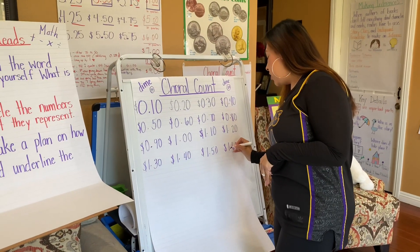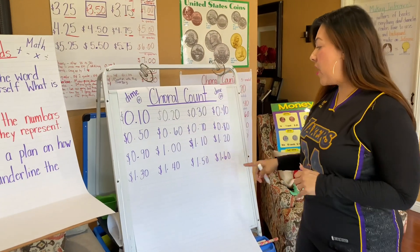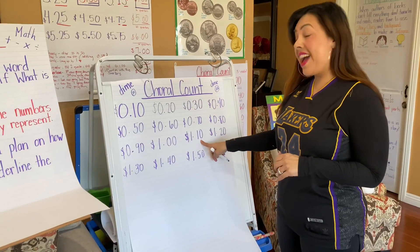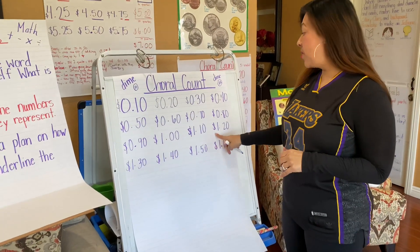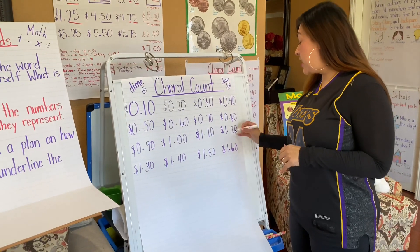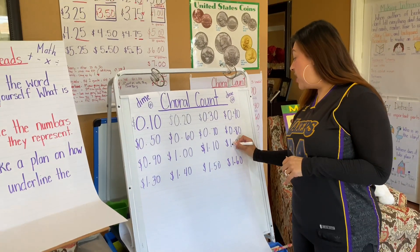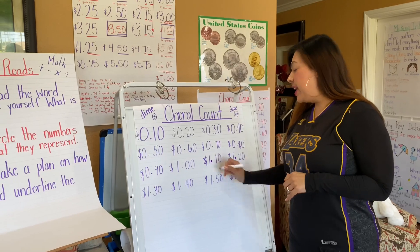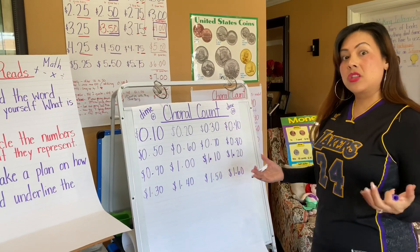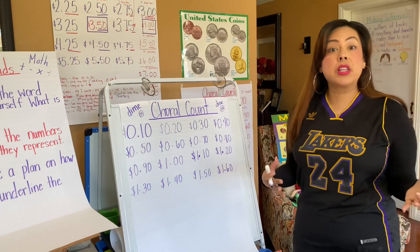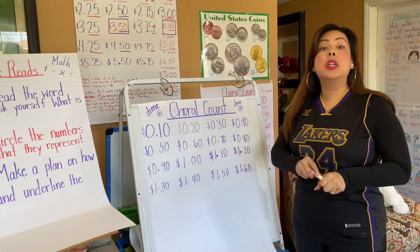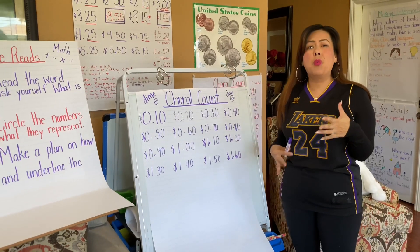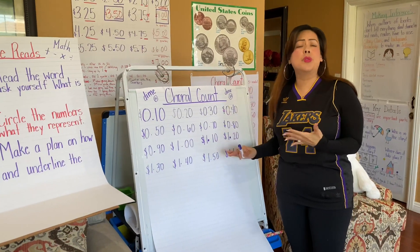I don't know if you've noticed that when I'm doing the choral counts, after I hit a dollar, I say $1.10, $1.20 — because this decimal point in money, we say 'and.' So that's one thing that I wanted to point out. Okay, so we're going to go ahead and do the choral count again and then we're going to talk about what patterns do we see.